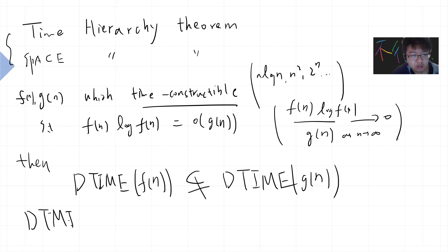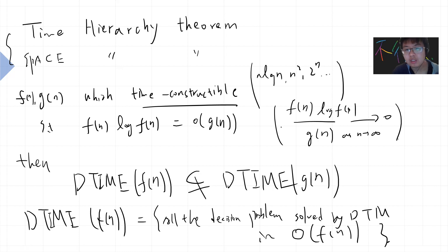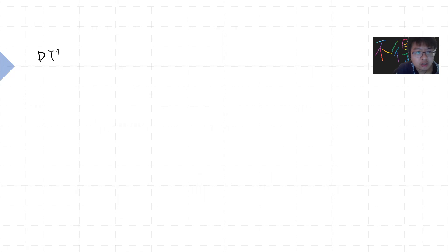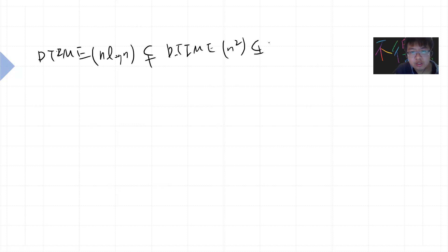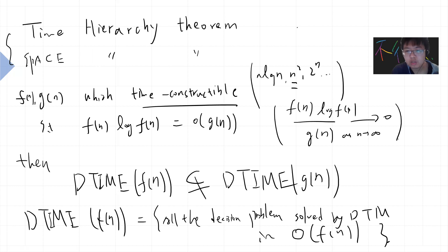DTIME(f(n)) means all the decision problems that can be solved by a deterministic Turing machine in big-O of f(n) time. This means there are some algorithms that you need n² time to solve — they cannot be solved by n log n. Simply speaking, DTIME(n log n) is strictly less than DTIME(n²), strictly less than DTIME(n³), and so on. Also, there's an algorithm you can solve in DTIME(n^2.999999) that you cannot solve faster. This is an interesting theorem that proves that giving more time really gives you more power to solve more problems.